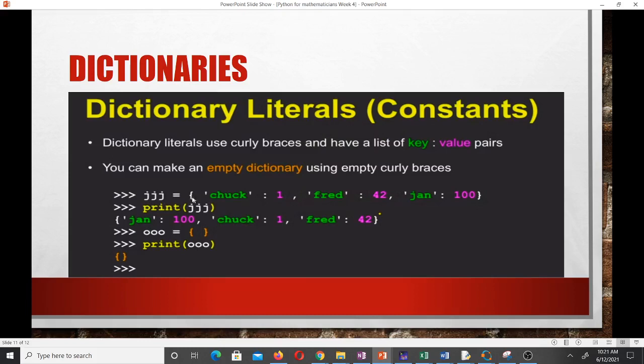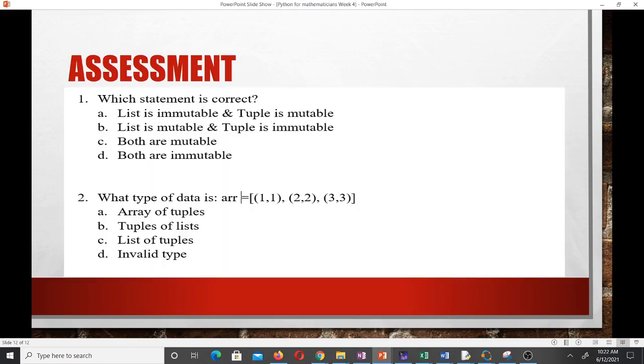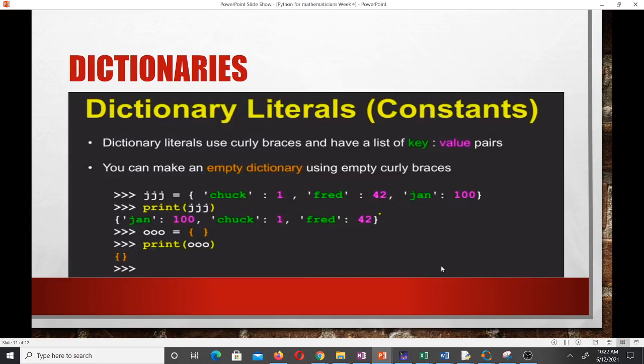I'm creating a dictionary called JJG. We open the curly brackets and type. This is the key for the first one, Chuck, the value is 1. Red, the value is 42. January, the value is 100. This is how we assess it. This example here is an example of an empty dictionary.